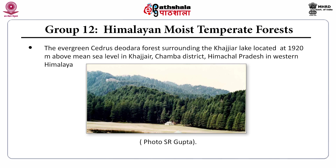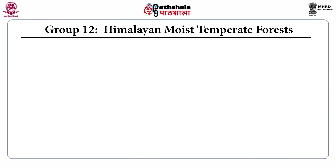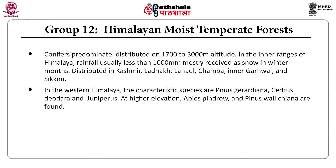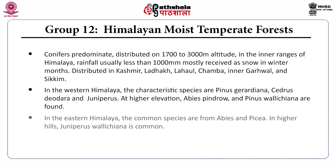Group 13, the Himalayan dry temperate forests, are dominated by conifers distributed at 1700 to 3000 meters altitude in the inner ranges of the Himalaya. Rainfall is usually less than 1000 mm, mostly received as snow in winter months. These forests are distributed in Kashmir, Ladakh, Lahaul, Chamba, inner Garhwal, and Sikkim. In the Western Himalaya, characteristic species are Pinus gerardiana, Cedrus deodara, and Juniperus. At higher elevation, Abies pindrow and Pinus wallichiana are found. In the Eastern Himalaya, common species are Abies and Picea, with Juniperus wallichiana common in higher hills.